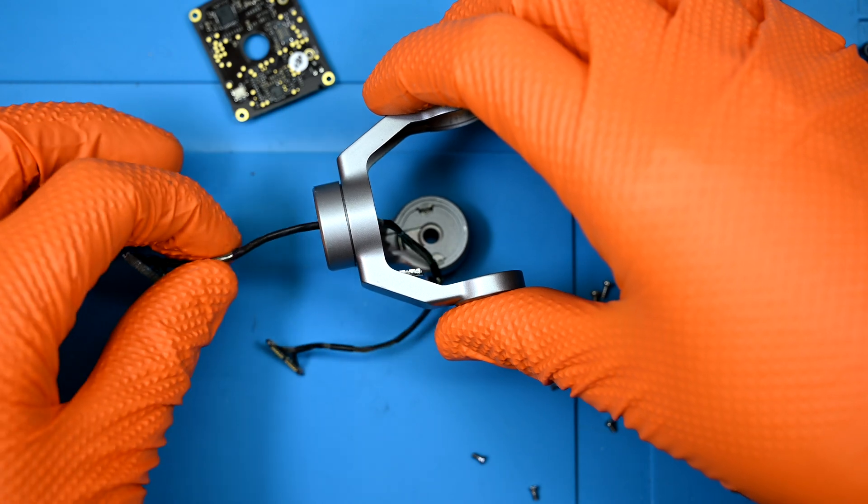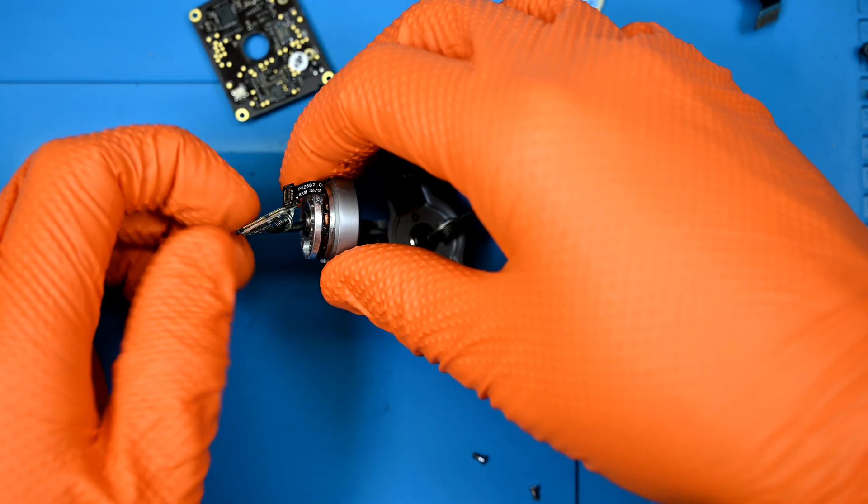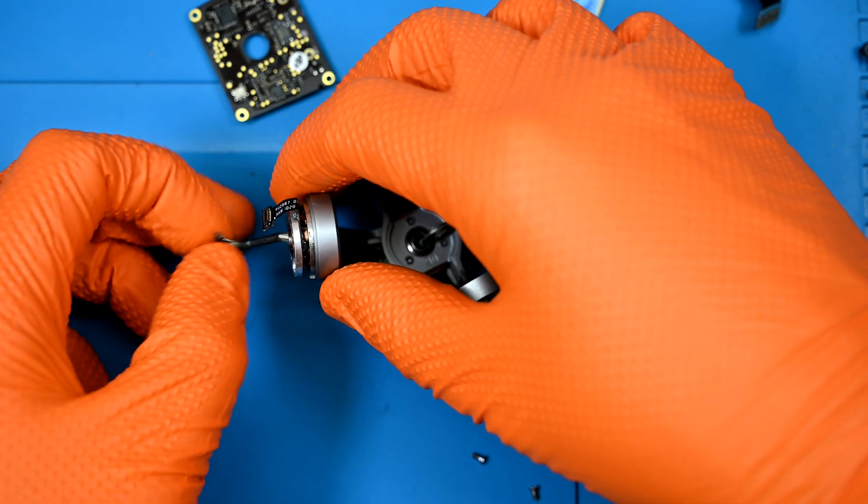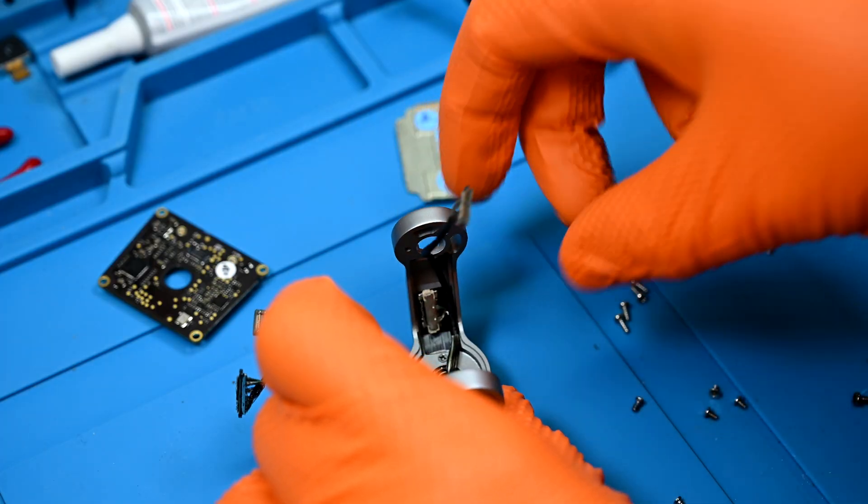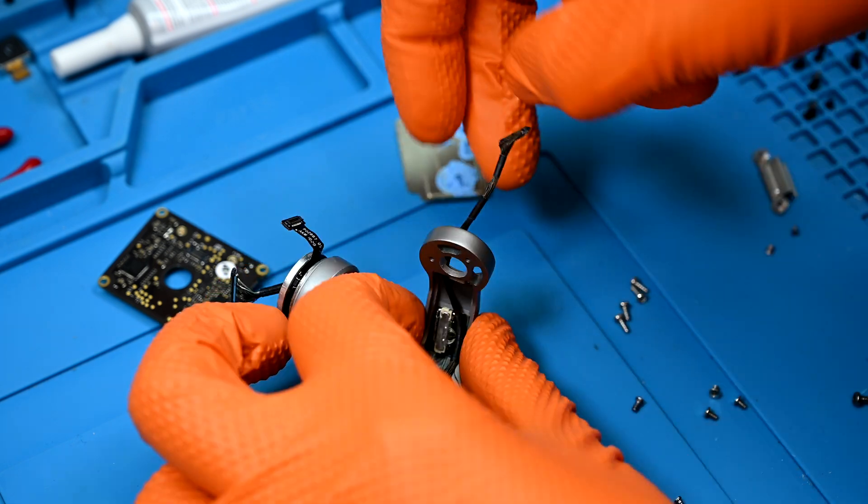I'll start by carefully threading the new harness through the roll motor then again through the arm leading up to the yaw motor so that it pokes out the top with a decent bit of slack on the line. I'm then going to carefully attach the white lego connector before threading the rest of the length through the arm.